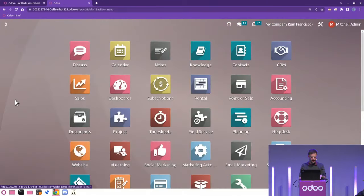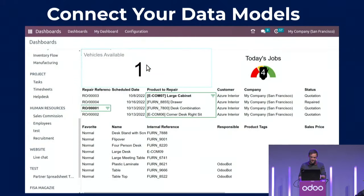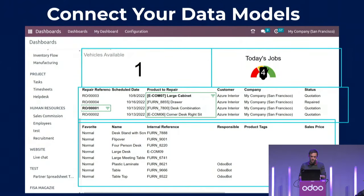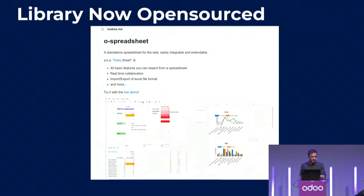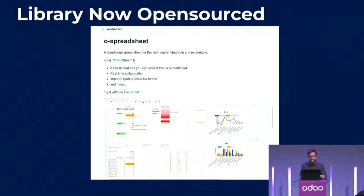There are a couple more features related to something we just added that I think is great for the community. The library related to Odoo spreadsheets has now been open-sourced. This doesn't mean Odoo spreadsheets is now on community edition — it's not. But the library being open-sourced enables dashboards to be used in the community edition. That's my understanding. It's a lot of power if you know how to make use of it, and we're happy to contribute that to the community.